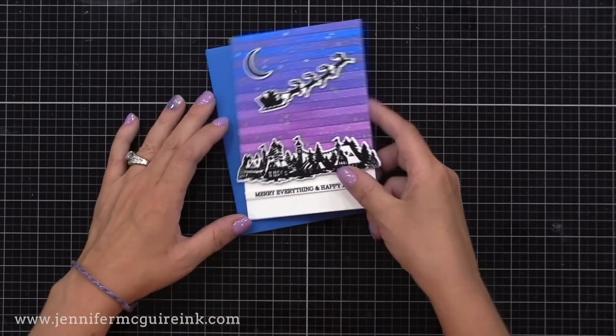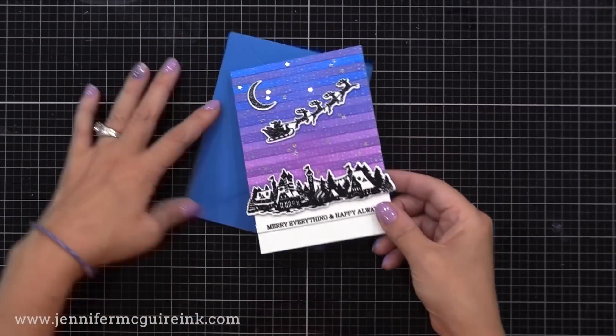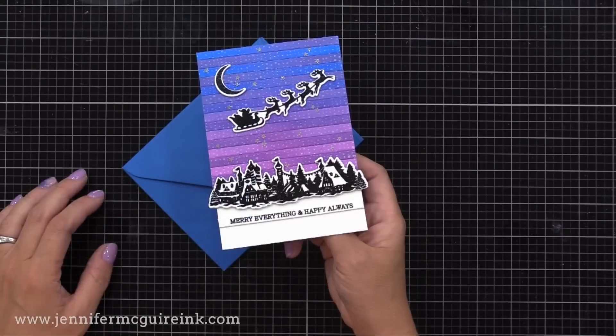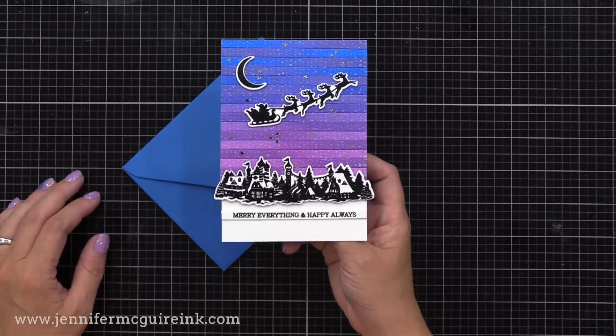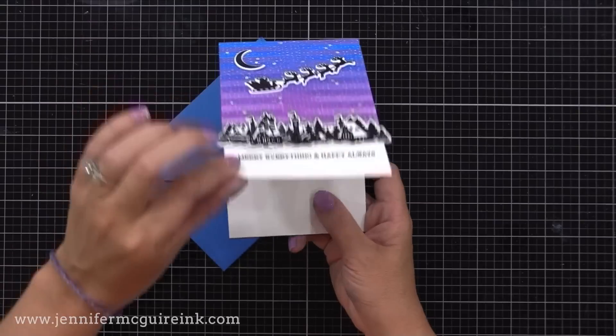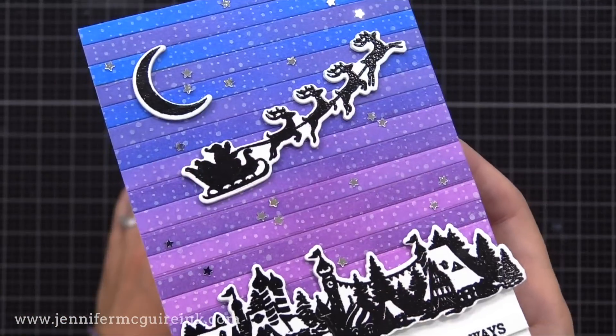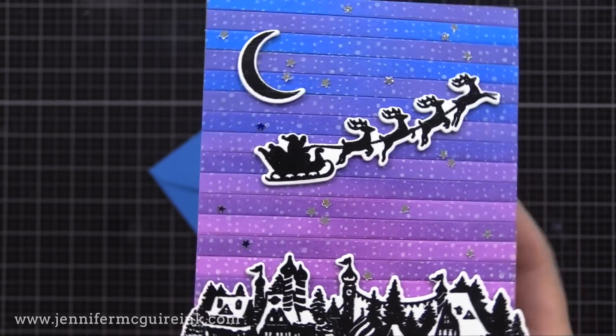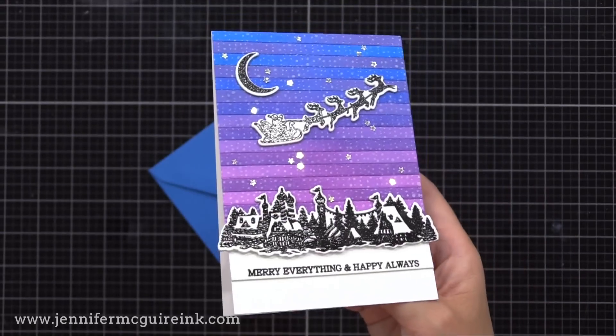Here's our completed card. The edges hang off, but that's okay. It'll still fit into our A2 envelope. You can see how those stars really catch the light and add a lot to the card. But the star of the show is definitely that striped background. By simply offsetting or turning some of the strips, we get a really cool background.